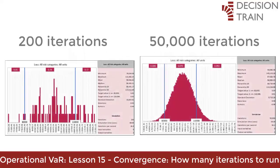The following two graphs compare a simulated histogram with only 200 iterations and one with 50,000 iterations. The two show the same methodology and eventually converge on the same results. At the test or student level, the understanding of the methodology can be perfectly achieved with the graph made with 200 iterations. At a professional level and for making robust decisions in real contexts, our recommendation is to carry out a sufficient number of iterations to achieve convergence.